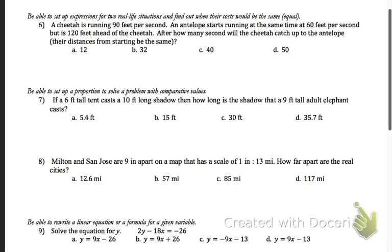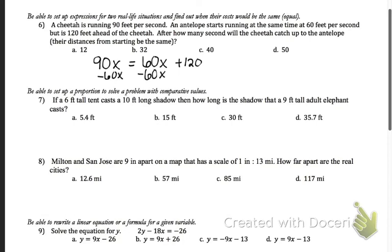Problem 6: a cheetah is running 90 feet per second, and an antelope starts running at the same time at 60 feet per second but starts 120 feet ahead of the cheetah. After how many seconds will the cheetah catch the antelope? We set two expressions equal — the cheetah's distance is 90x and the antelope's is 60x plus 120, since it started 120 feet ahead. Subtract 60x from both sides to get 30x equals 120, then divide by 30 to get x equals 4 seconds.